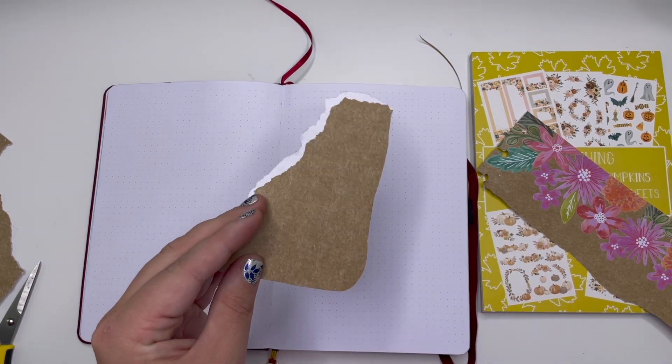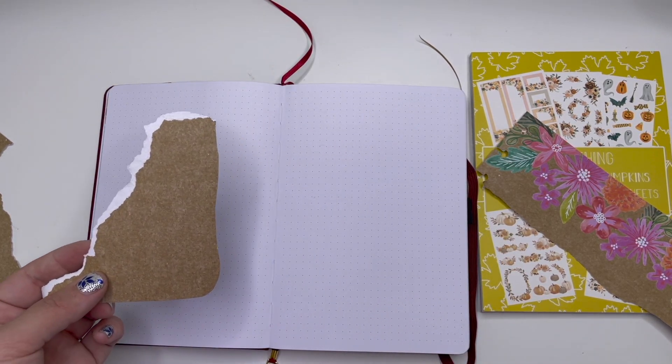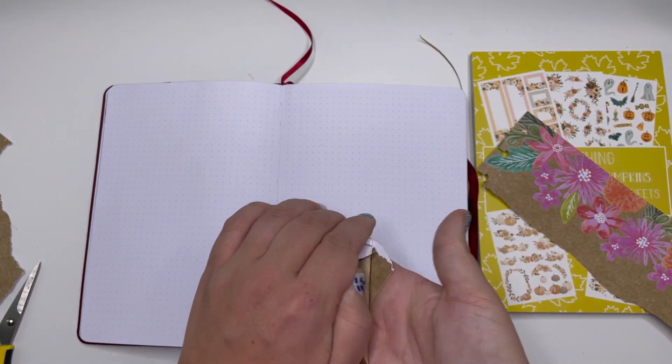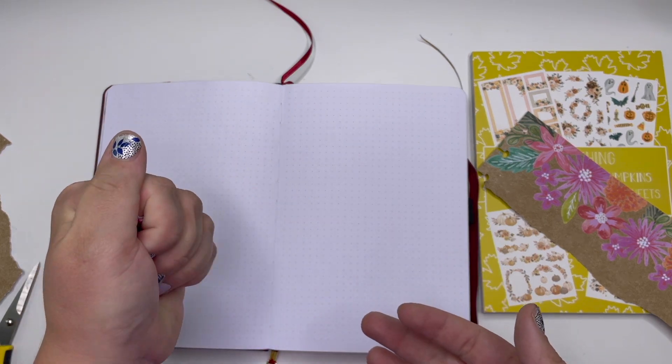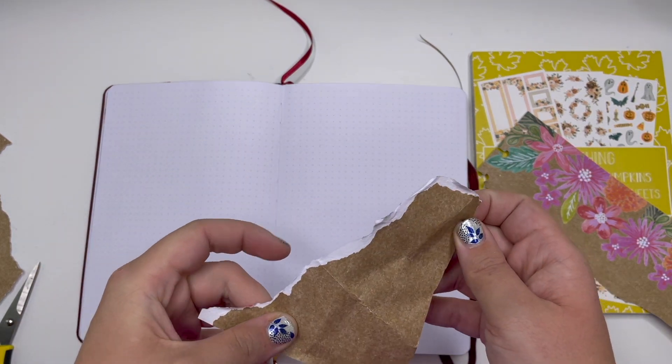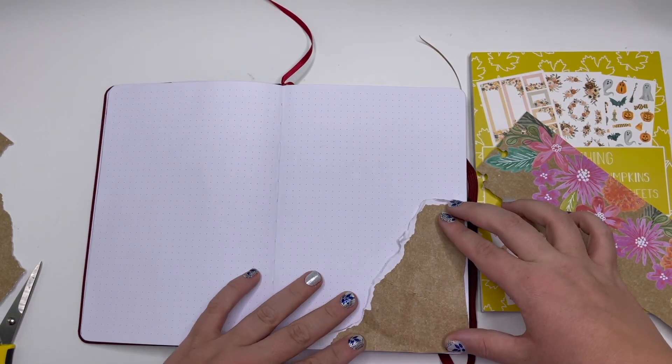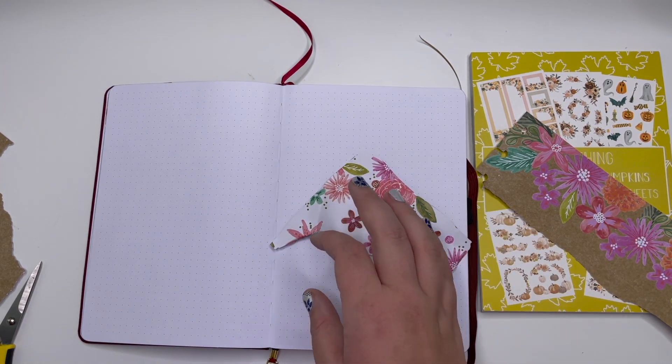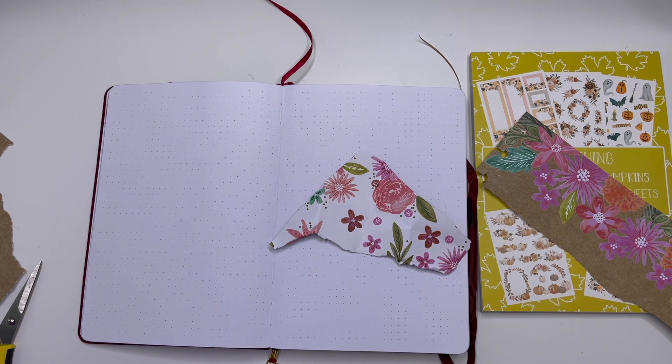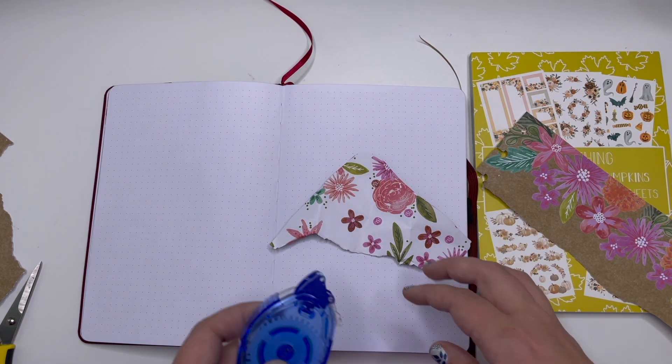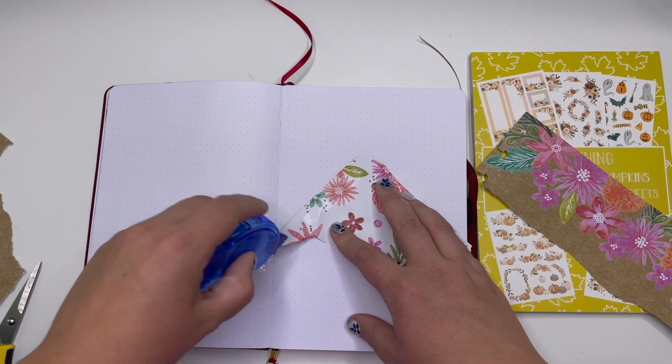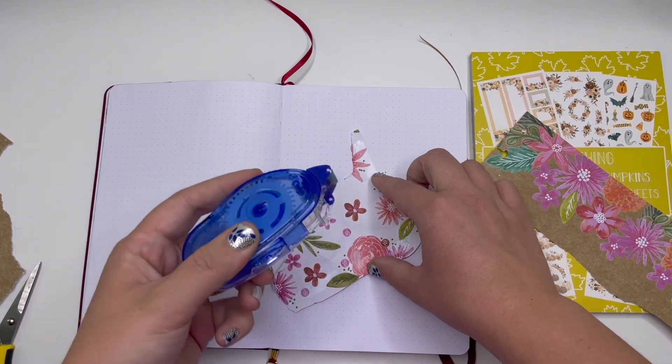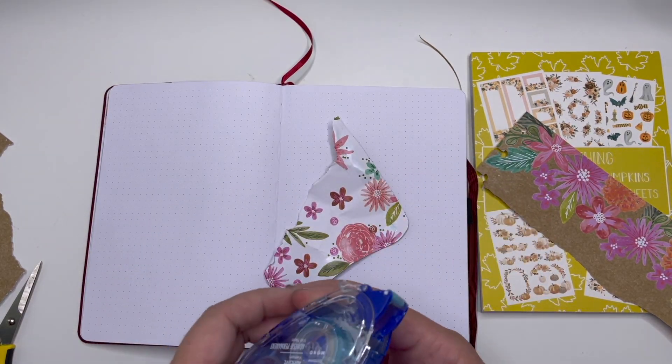Something I just saw somebody do on Instagram - they crumpled it up and then put it down kind of like that, and it kind of gave some character. I guess we're gonna try it. I mean, I already crumpled it up and that's the only brown paper that I have. I thought that was so creative. I love that idea.